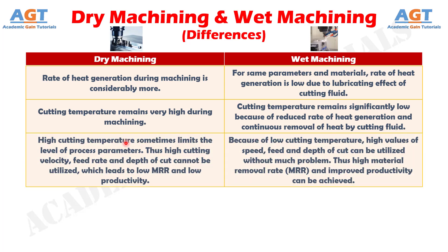Number 8: In dry machining, high cutting temperature sometimes limits the level of process parameters. Thus high cutting velocity, feed rate and depth of cut cannot be utilized, which leads to low material removal rate and low productivity. Whereas in wet machining, because of low cutting temperature, high values of speed, feed and depth of cut can be utilized without much problem, thus achieving high material removal rate and improved productivity.